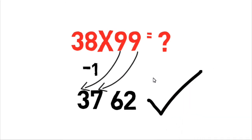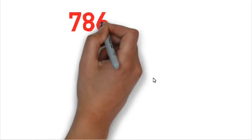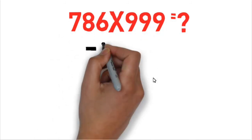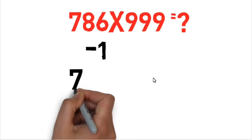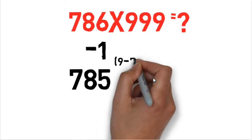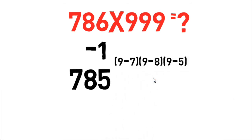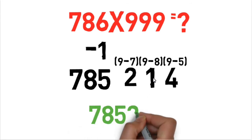So one more example we'll take. Let's multiply 786 by 999. 786 minus 1 equals 785, and now 9 minus 7, 9 minus 8, 9 minus 5. So these three digits will be the answer, so the complete answer will be 785,214.